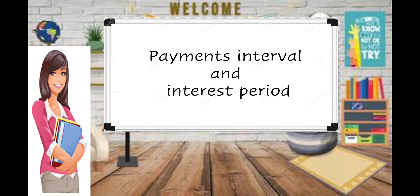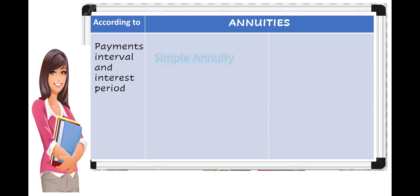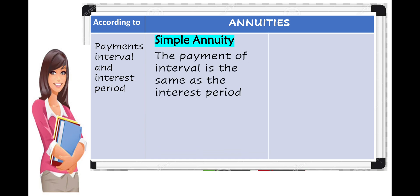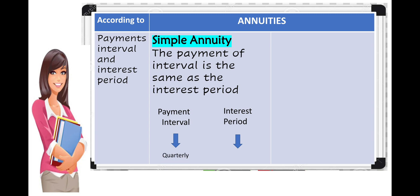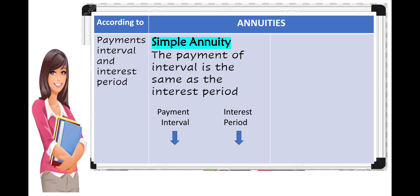Annuity may be classified in different ways according to payment interval and interest period. For simple annuity, the payment interval is the same as the interest period. For example: payment interval is monthly and interest is compounded monthly; payment interval is quarterly and interest is compounded quarterly; or payment interval is semi-annually and interest is compounded semi-annually — in each case, they are the same.